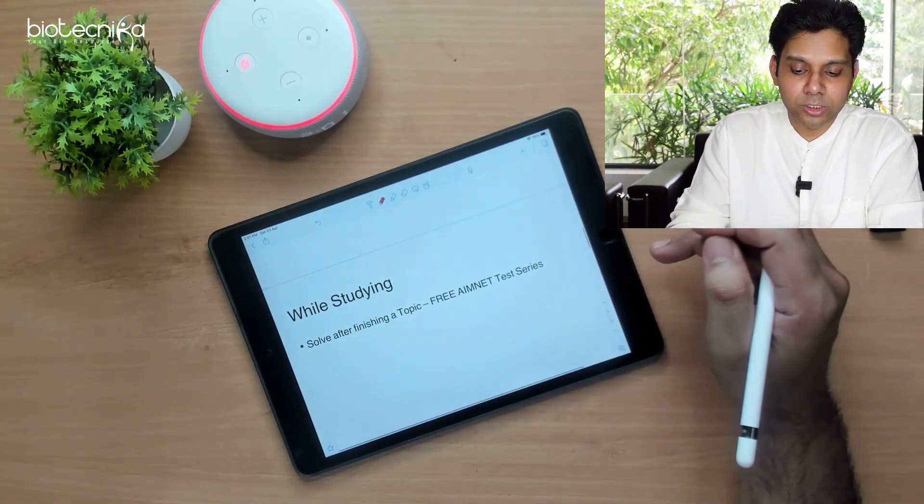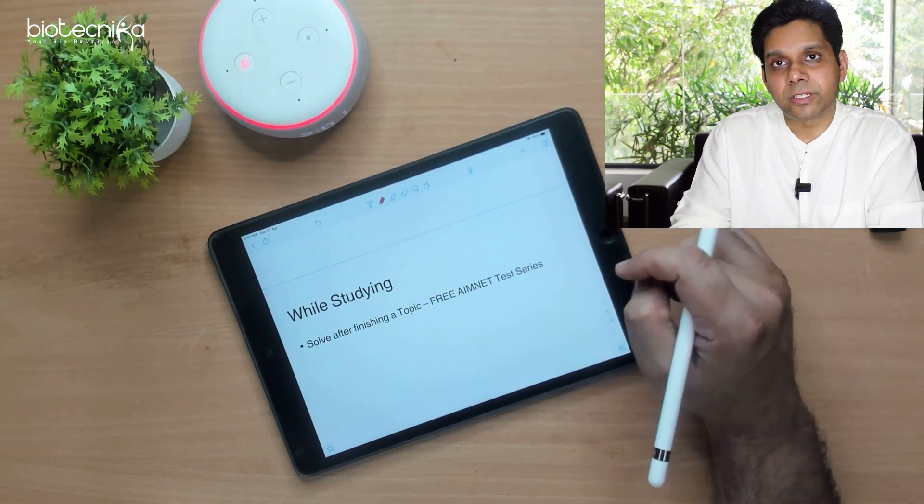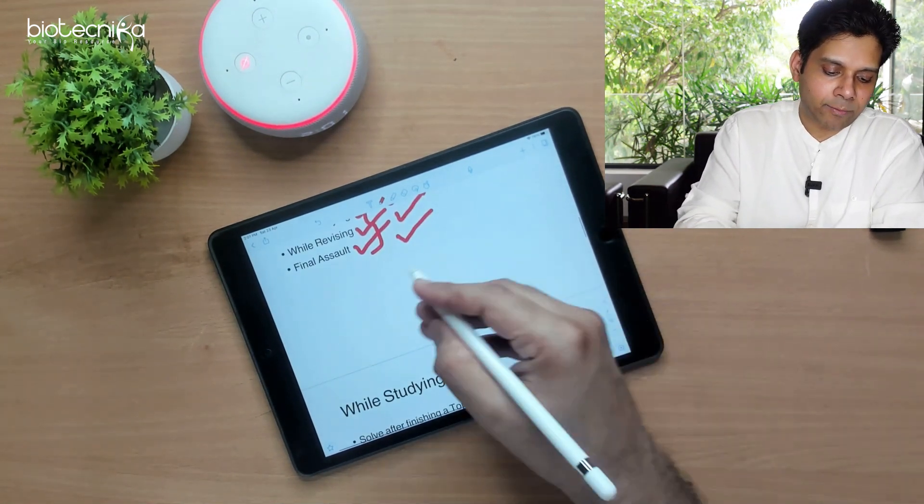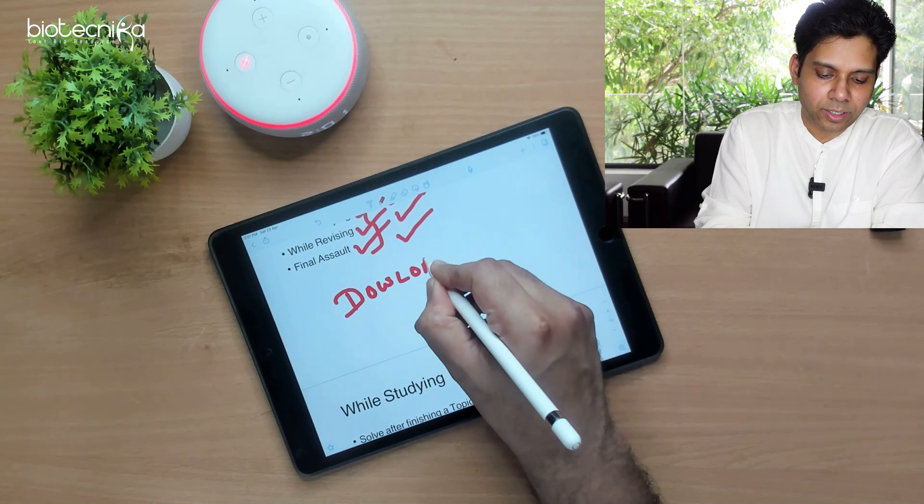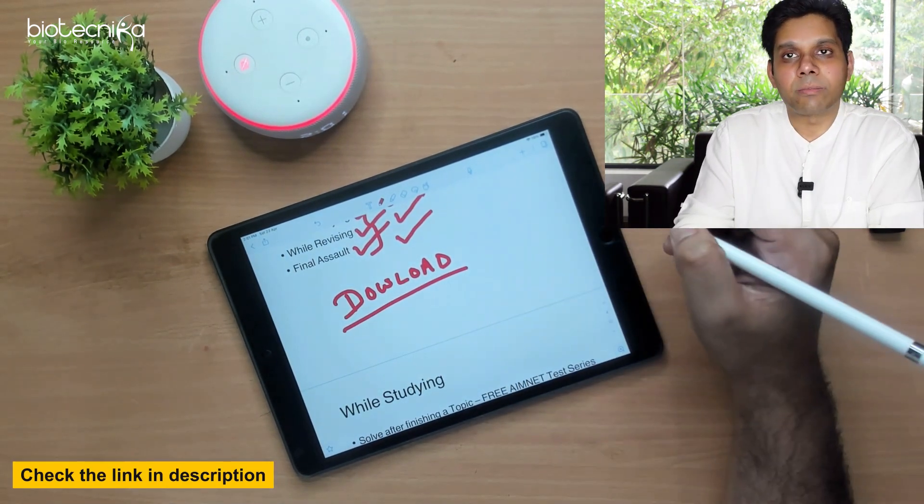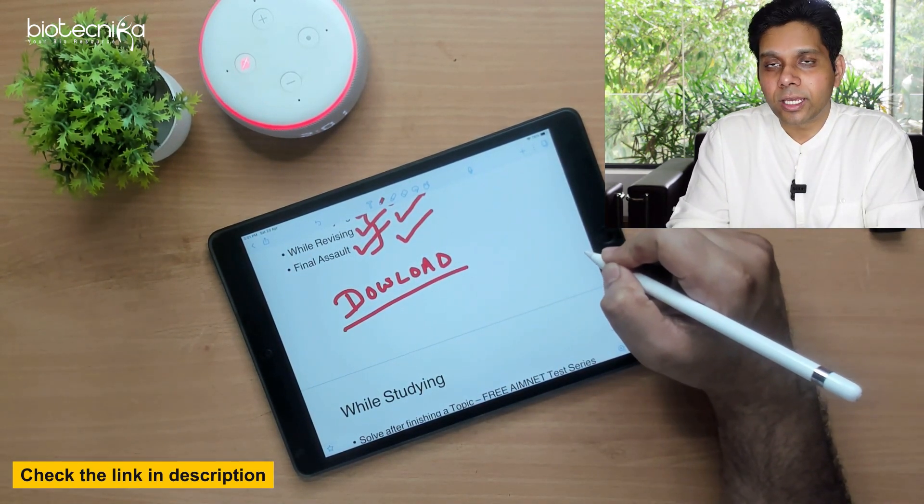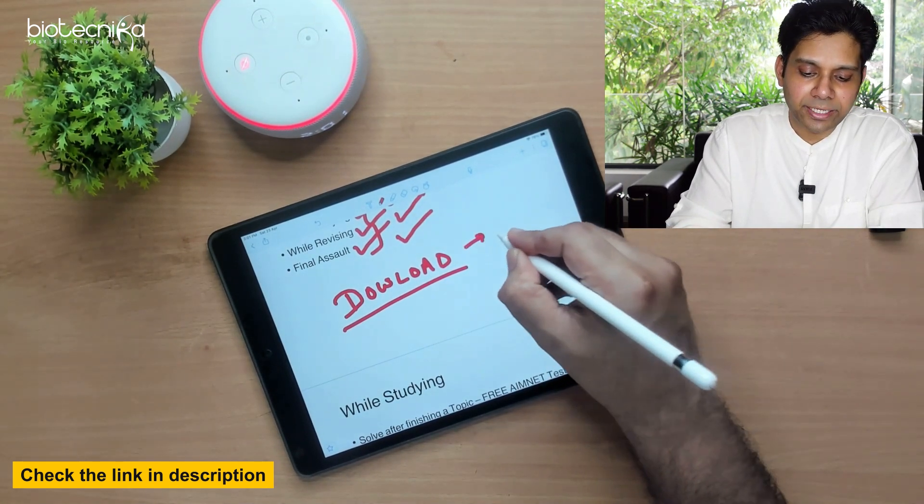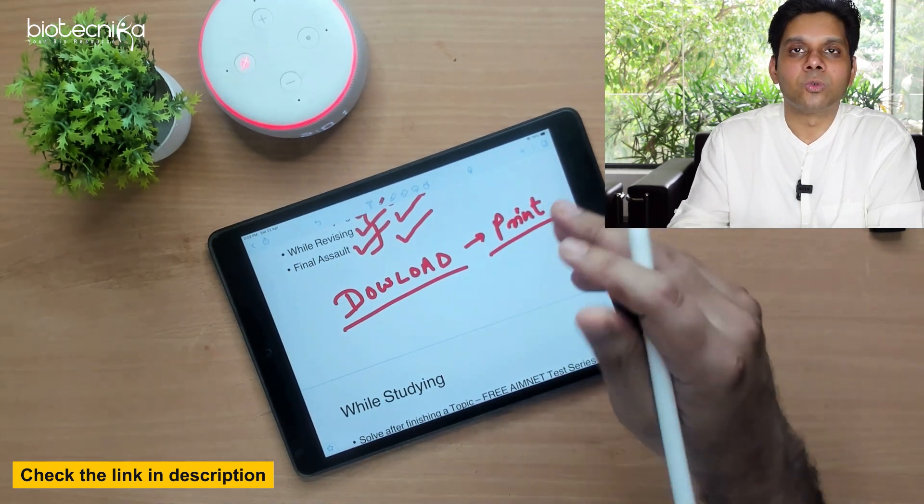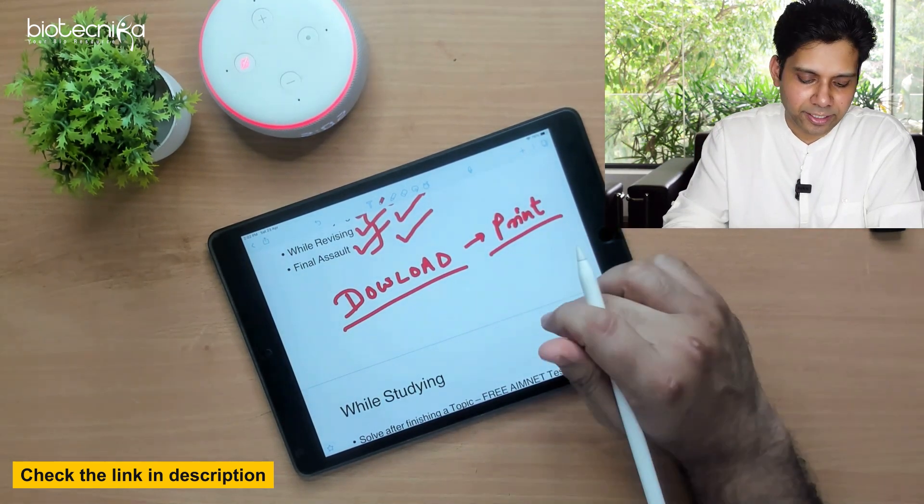Now the question is how would you get these previous question papers. First thing I am doing is there is a download link below this video. Please click on that and download all the last 5 years, 10 years question papers and print it. Keep printing it as you keep solving.